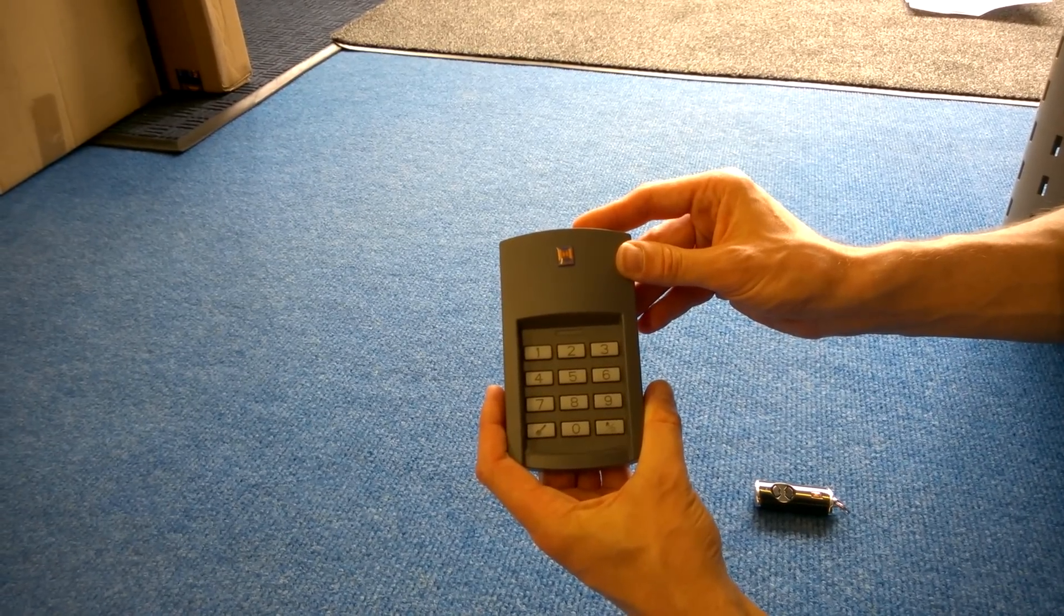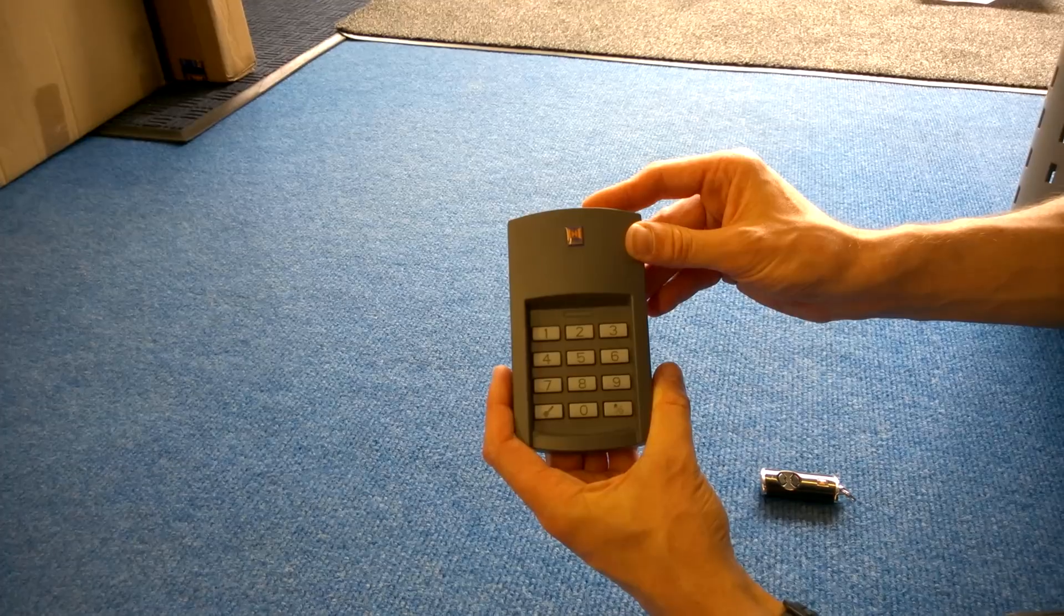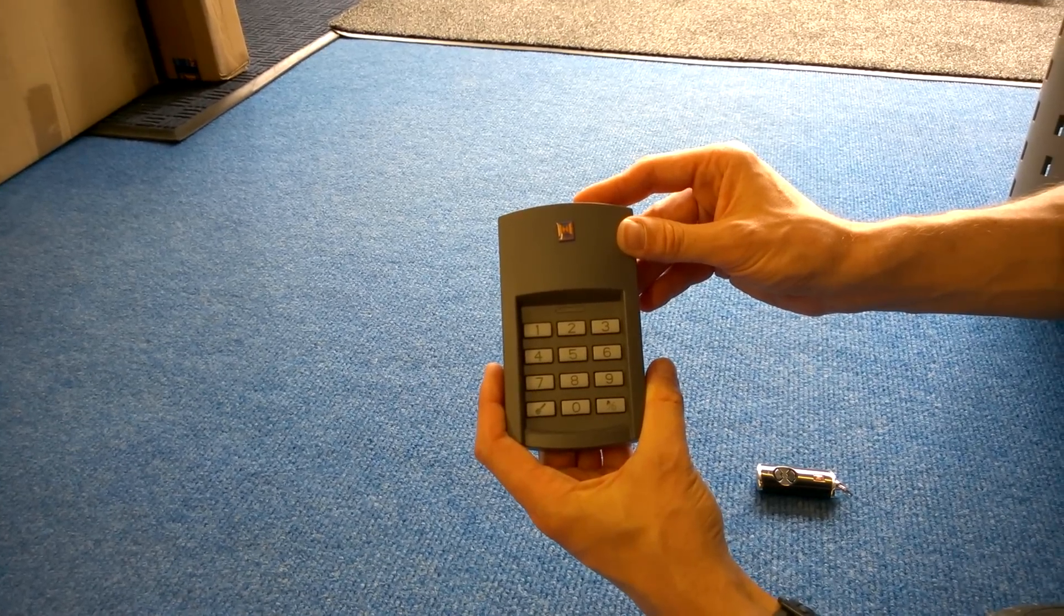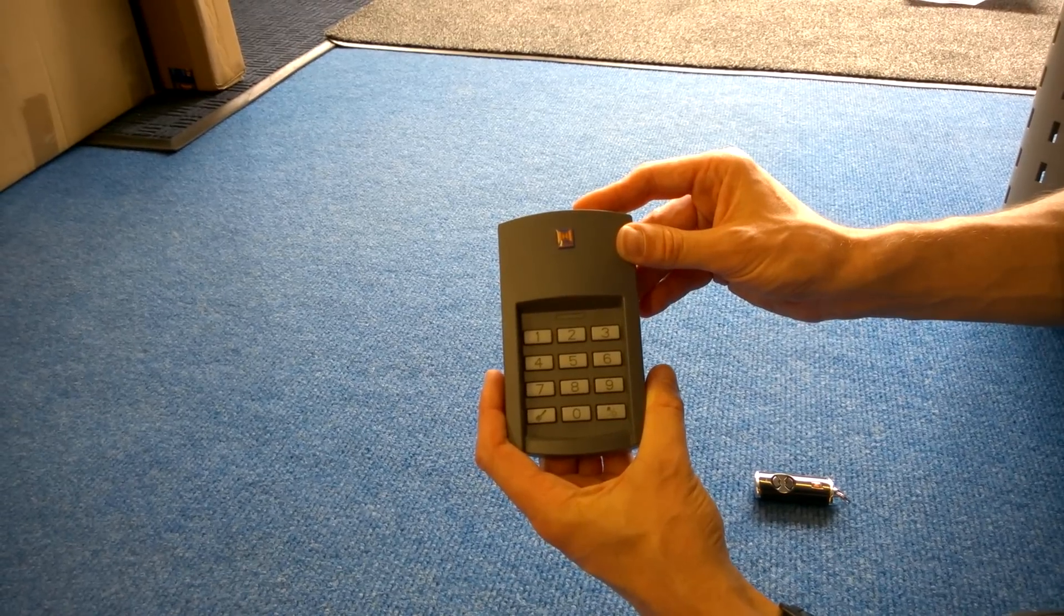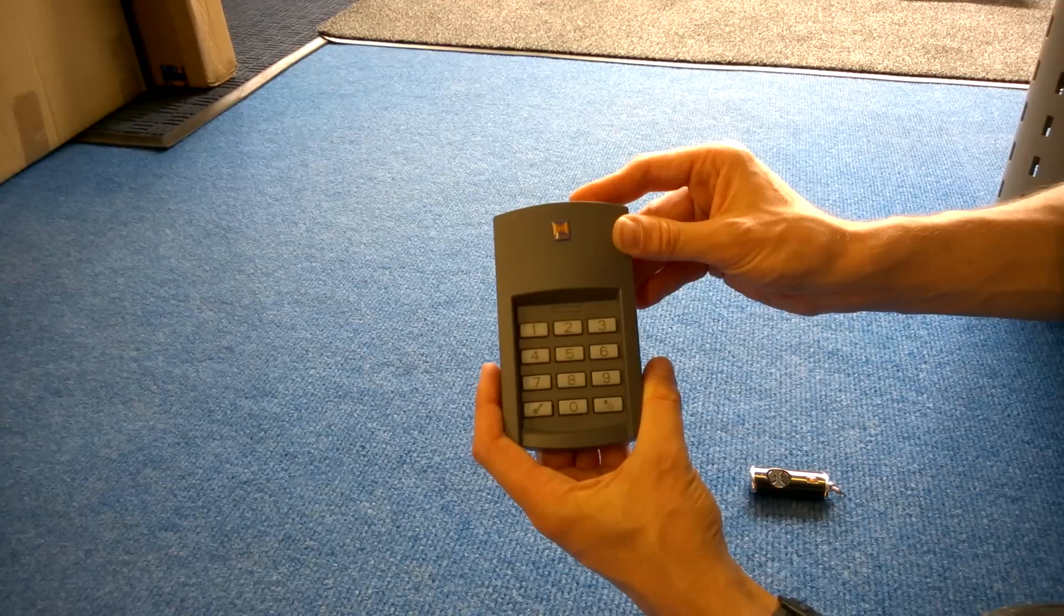Okay, here we have the Horman FCT3 Bi-Secure Digital Wireless Keypad. In this video we're going to set it up, put a code in, and code it into our hand transmitter to operate the door.